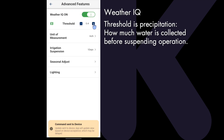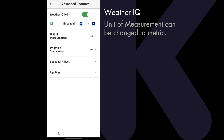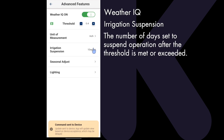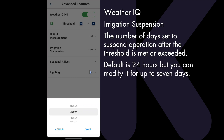If the local weather data collected more than the threshold, WeatherIQ would suspend operation and send you an email about the suspension and that the threshold was exceeded. Unit of measurement can be changed from inches to millimeters. Irrigation suspension is the number of days set to suspend operation after your defined threshold is met or exceeded. The default is 24 hours, but you can modify it for up to seven days.